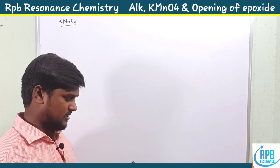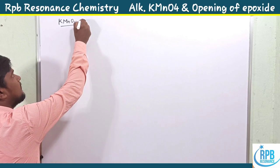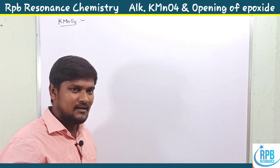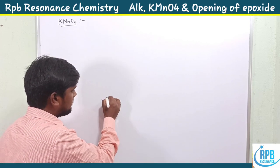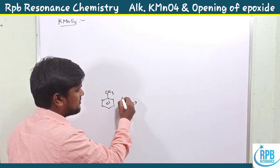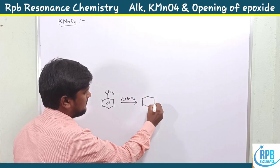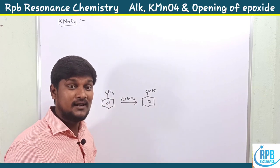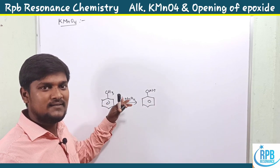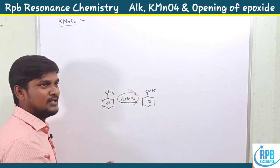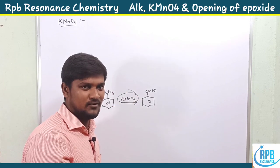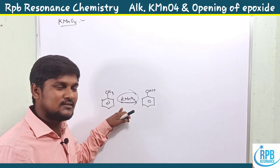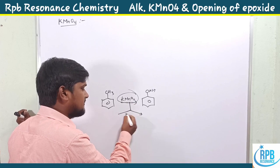Potassium permanganate is a very highly oxidizing reagent. It oxidizes even the benzylic position — in the presence of KMnO4 it oxidizes the benzylic position to carboxylic acid. That is how much oxidizing capacity potassium permanganate has. KMnO4 is a strong oxidizing agent, but based on the conditions it acts with different characters.